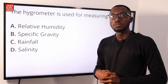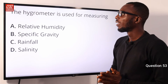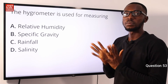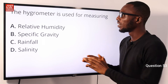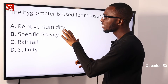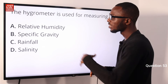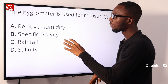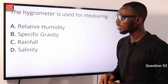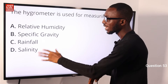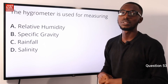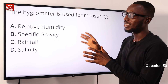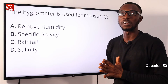Question 53: The hydrometer is used for measuring what? Option A, relative humidity. For specific gravity we use a hydrometer. For rainfall, we use a rain gauge. And for salinity, we use a salinometer. So option A is very correct.